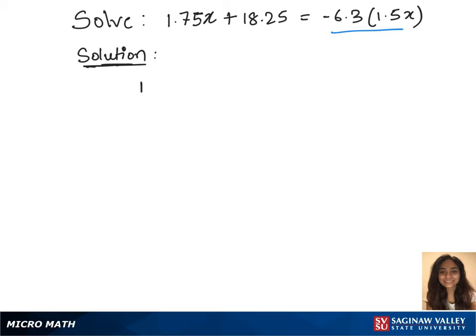That will give us 1.75x plus 18.25 equals minus 6.3 times 1.5 is minus 9.45x.